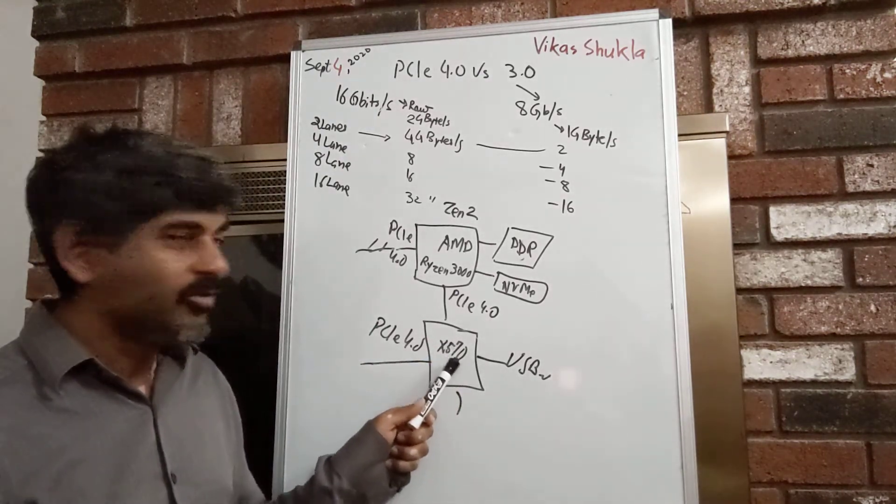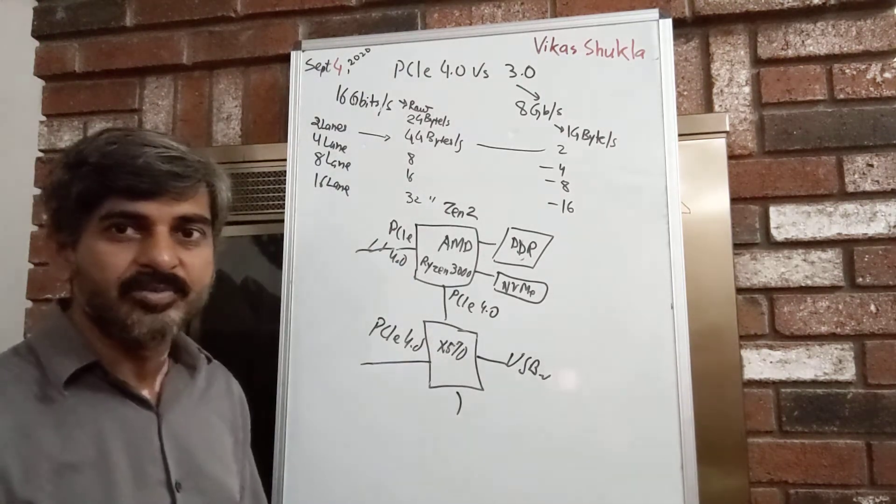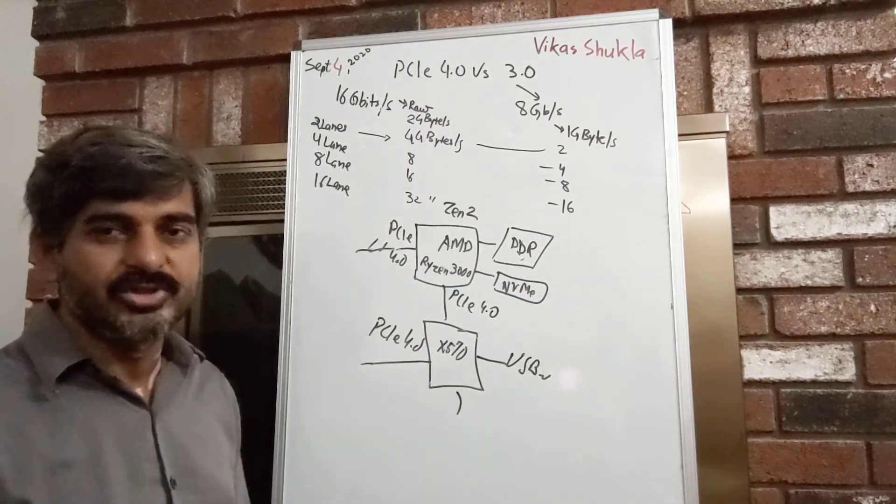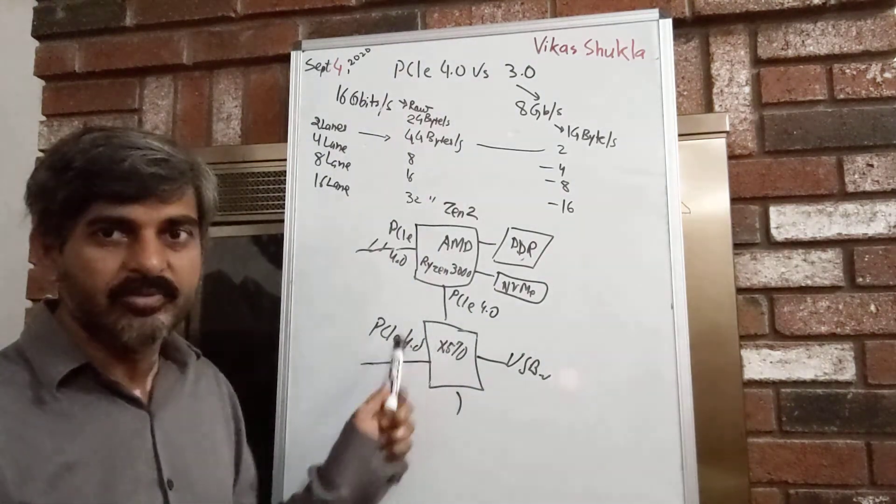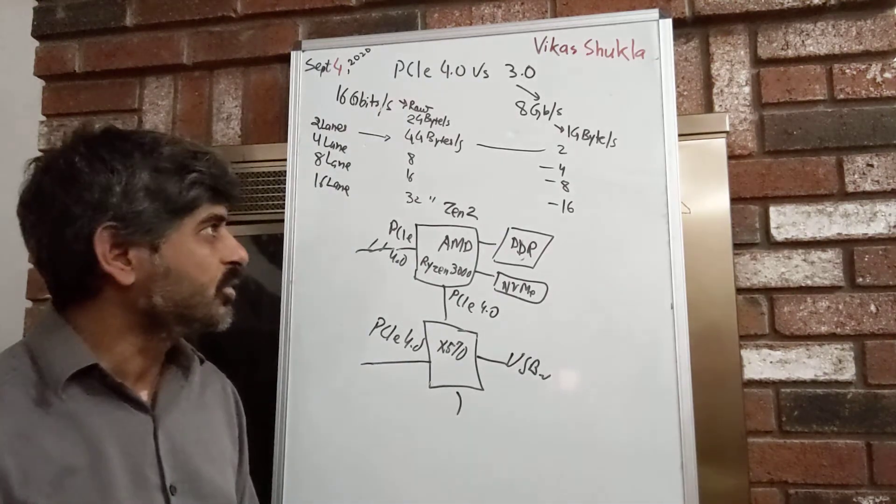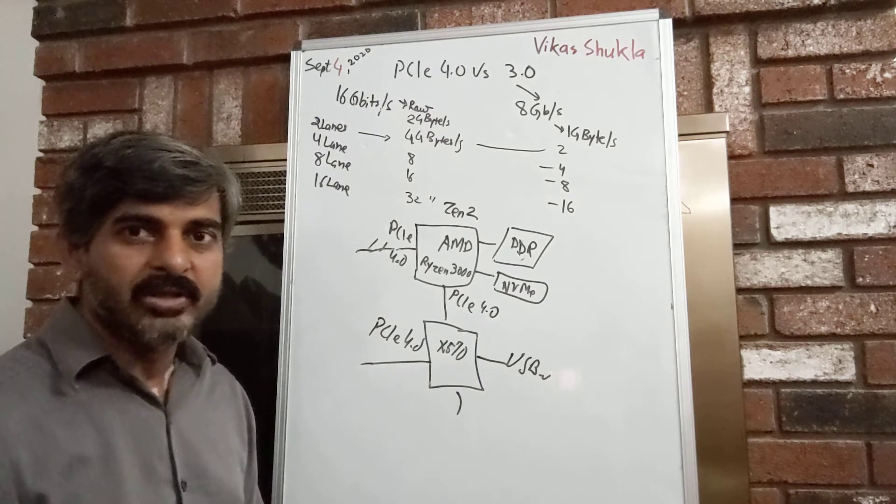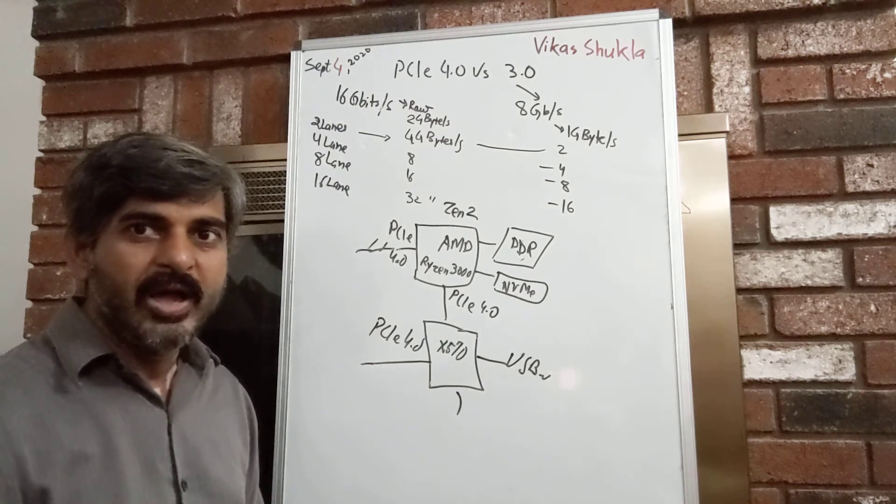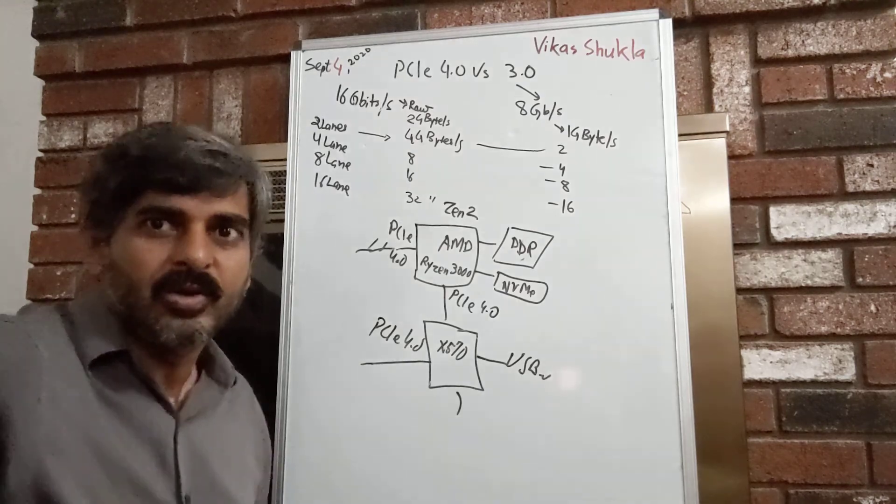Because if you use something like a 550 chipset from AMD that has older PCI Express 3.0, the motherboard will be cheaper, but you will not get the right speed, the full speed. You will not be able to take advantage of PCI Express 4.0. So this is just to give you a quick update on PCI Express 4.0 vs 3.0. And I hope you got the value by seeing this video. Thanks for taking a look.